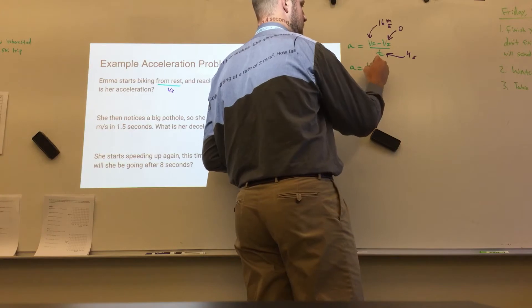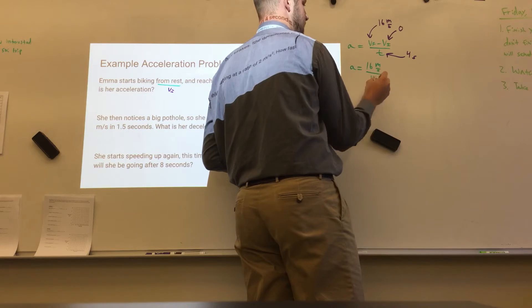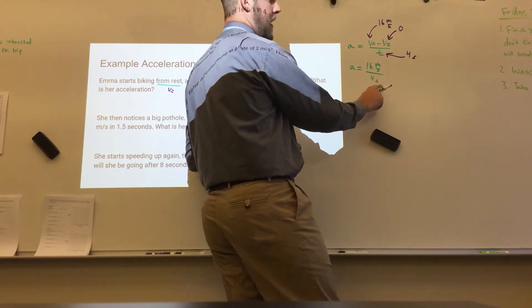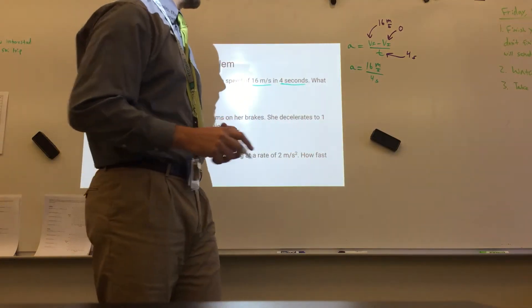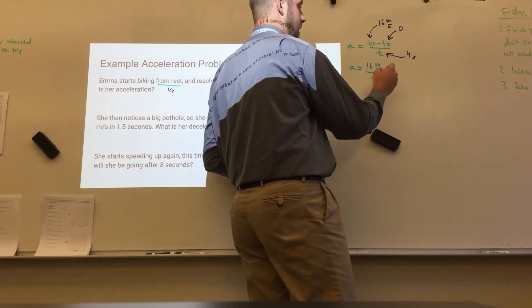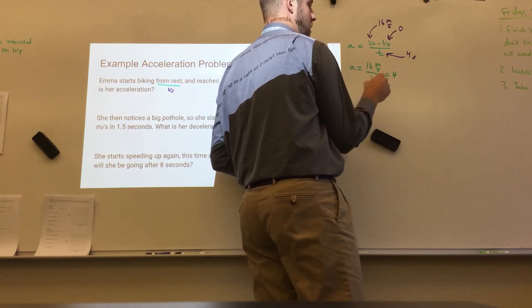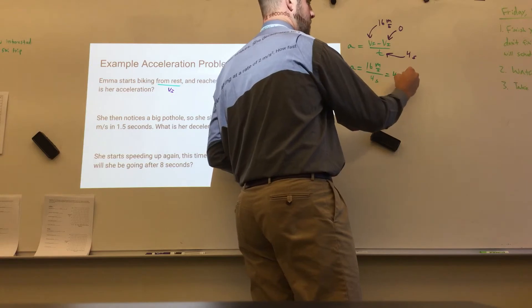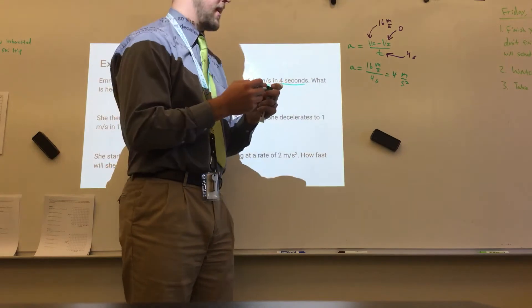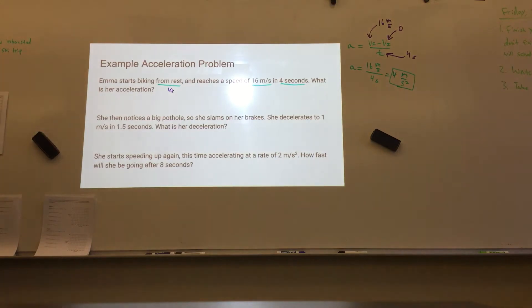A is equal to 16 meters per second divided by four seconds. Because seconds is in the denominator here and it's being divided by again here, it actually doesn't cancel out. This is the case where you're basically putting that seconds in the denominator again, which means that simplifies to 16 divided by 4, that is 4, and meters per second squared. So that's how we get meters per second per second there. So that's your answer for the first part, her acceleration is 4 meters per second squared.